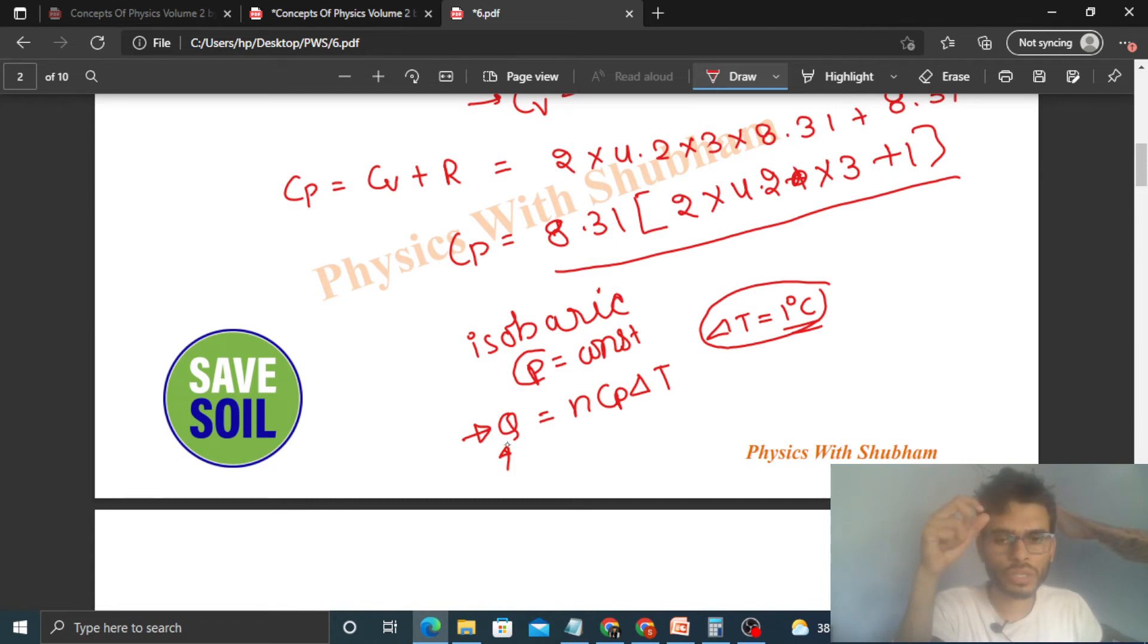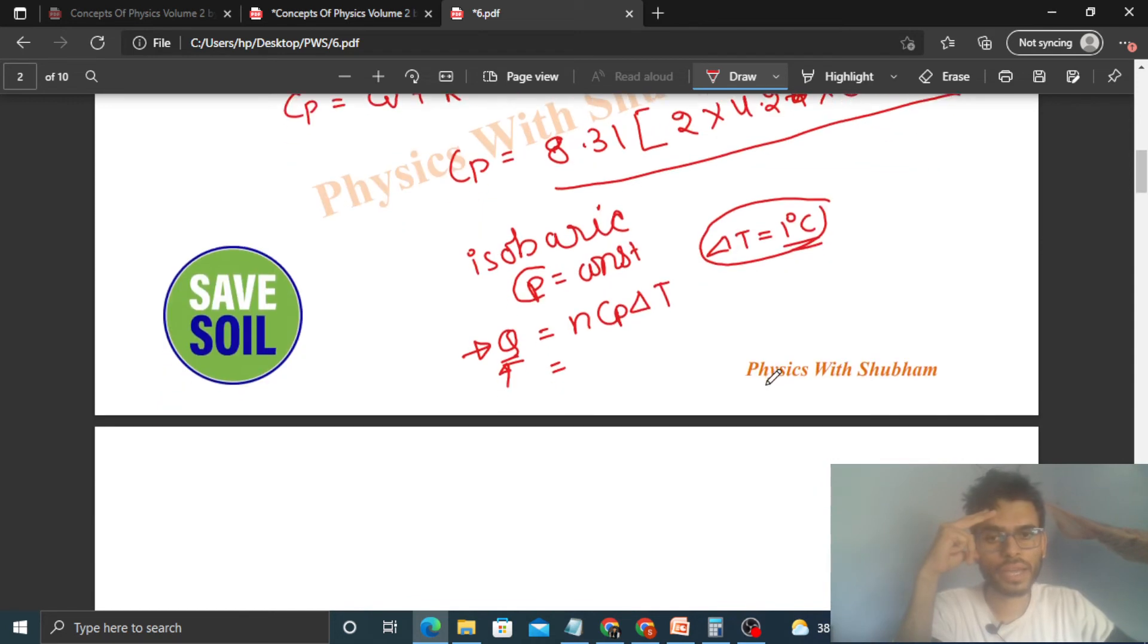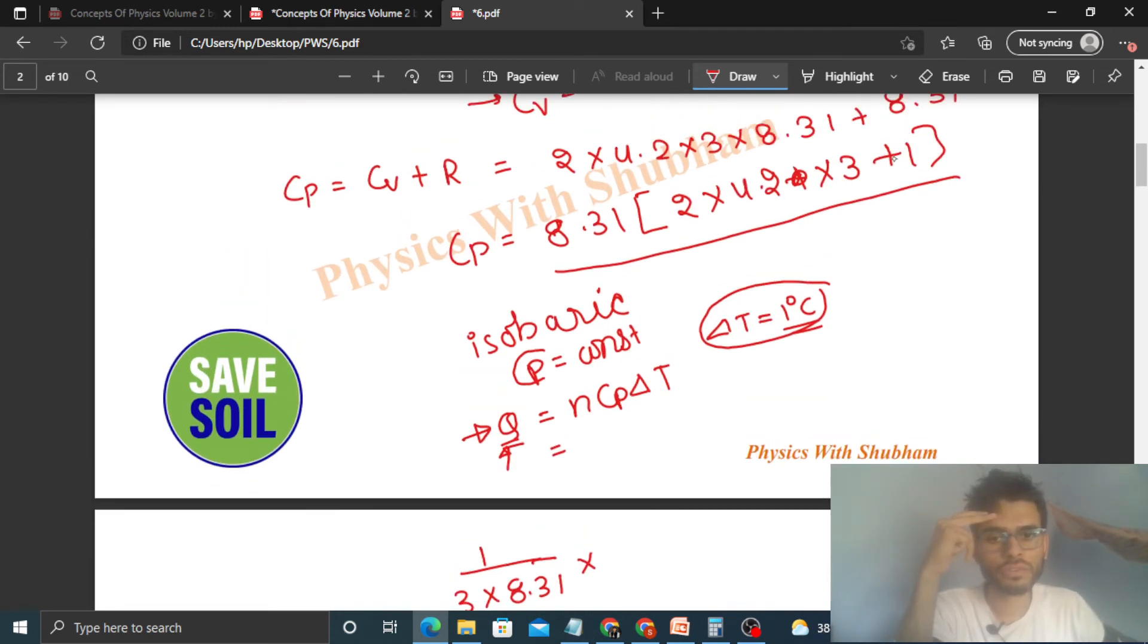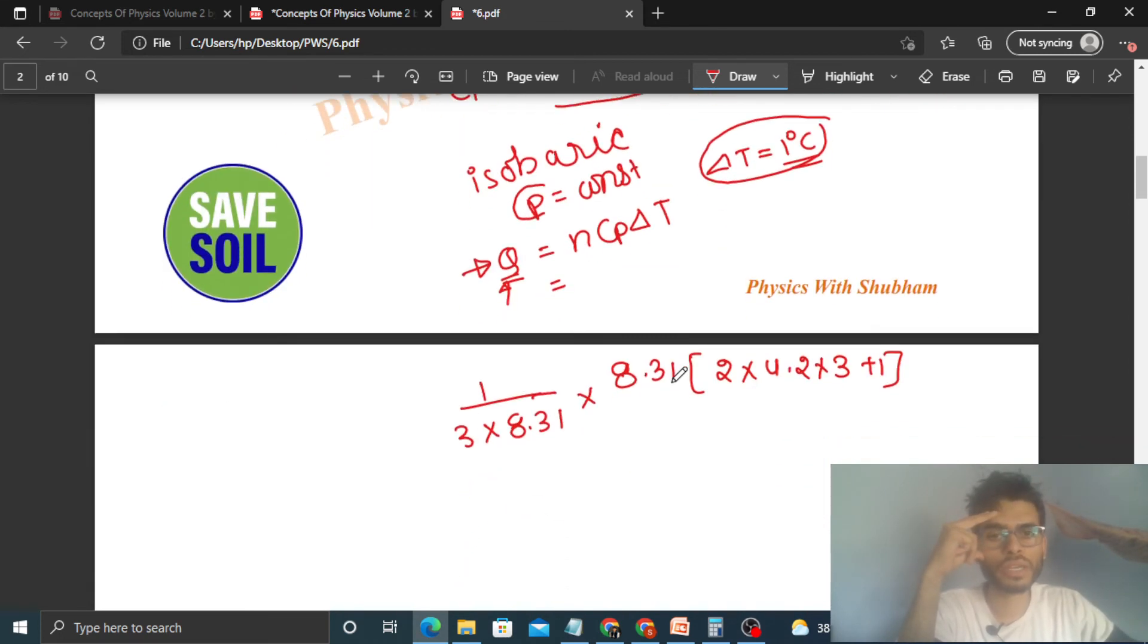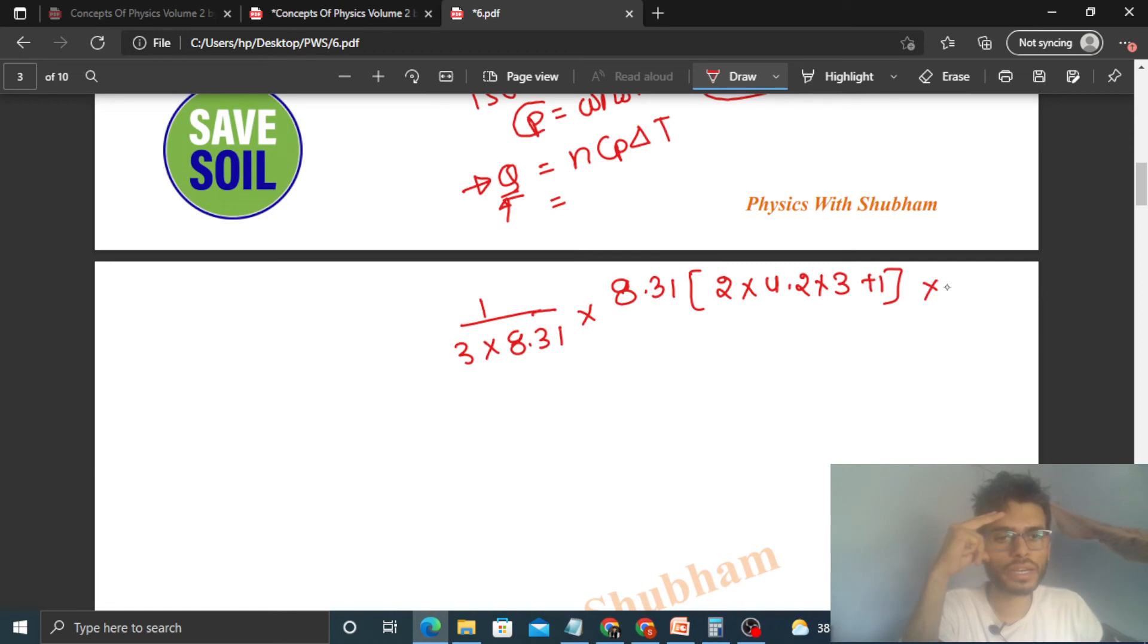So you have to find out the value of Q. So that will be, see N's value that is 1 upon 3 into 8.31 into Cp's value from here put it. This is the value of Cp. Then we put it, 8.31 into 2 into 4.2 into 3 plus 1. I have put Cp's value into delta T. Delta T is 1.